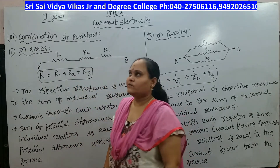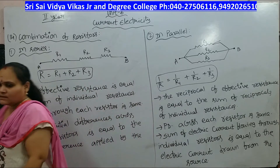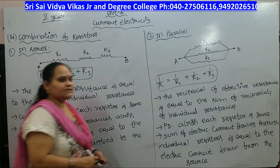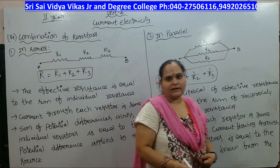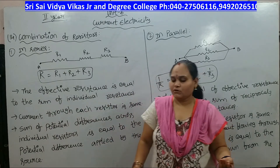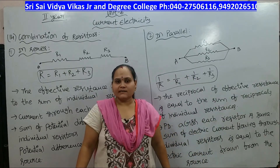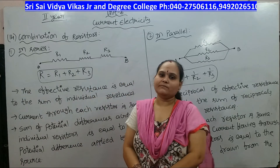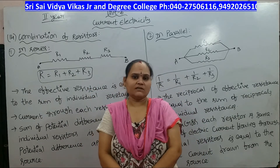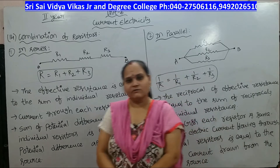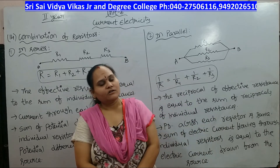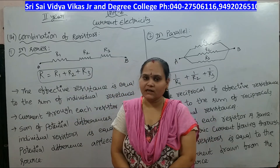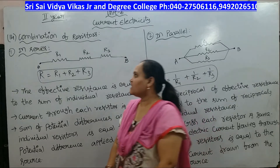Conductivity is the reciprocal of resistivity. Conductivity is denoted by sigma, and sigma = 1 / rho, where rho is the resistivity. In yesterday's class we discussed conductivity and superconductivity.